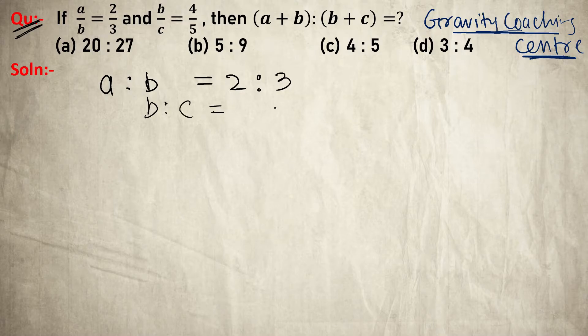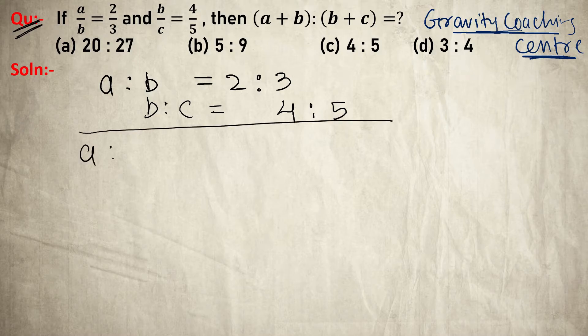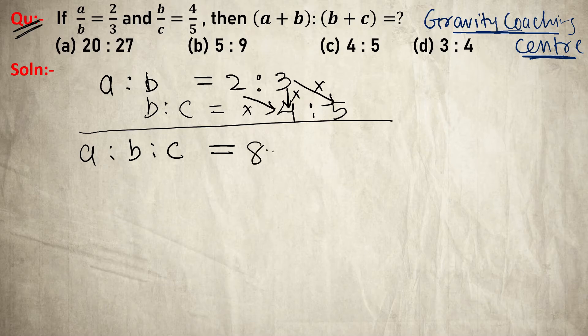To find a:b:c, we'll use an easy trick. We multiply: 2 by 4, 3 by 4, and 3 by 5, which gives us 8.